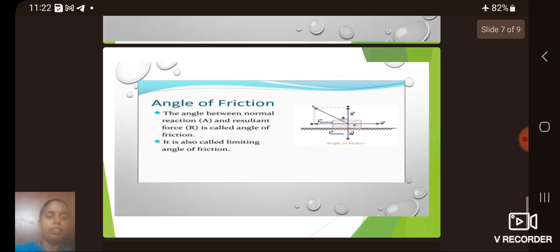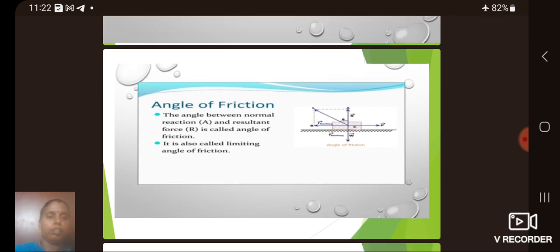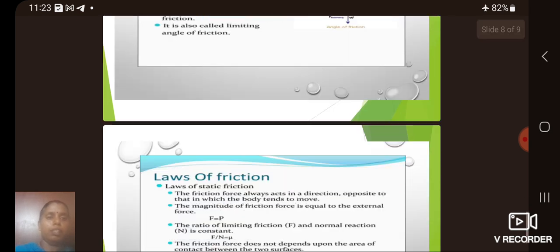Then let me see the angle of friction. The angle between the normal reaction and the resultant force R is called the angle of friction. It is also called the limiting angle of friction.